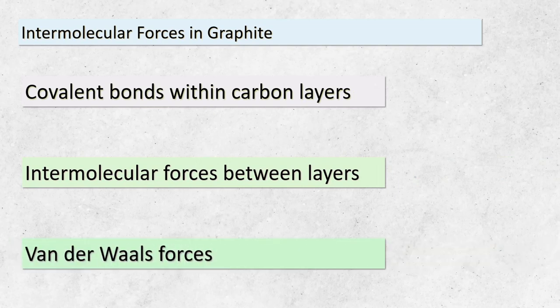In our last discussion, we discovered the layered structure of graphite. Now let's explore the forces that hold these layers together. Within each layer, carbon atoms are covalently bonded to each other, forming those interconnected hexagonal rings. However, the layers themselves are not covalently bonded — they are held together by intermolecular forces known as van der Waals forces, which are relatively weak compared to covalent bonds. Van der Waals forces are gentle attractions between molecules or atoms due to temporary fluctuations in electron distribution. In the case of graphite, these forces allow the layers to stick together. It's these intermolecular forces that give graphite some of its interesting properties, such as its slippery nature and its ability to act as a lubricant.